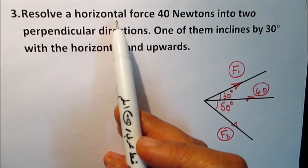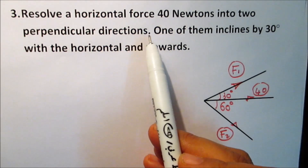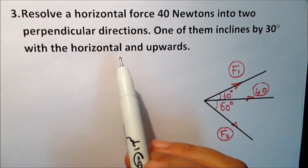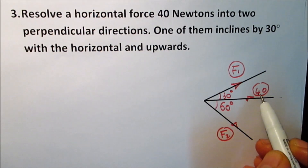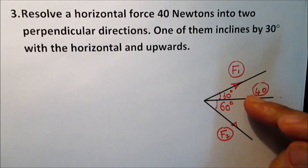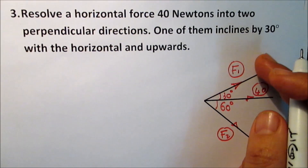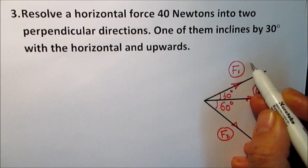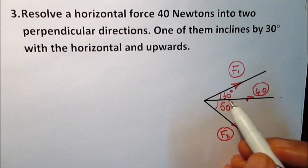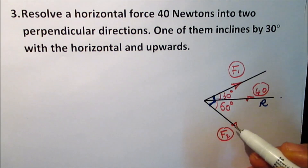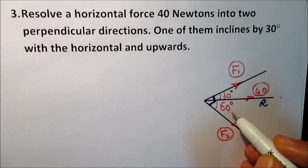Another example: resolve a horizontal force of 40 newtons into two perpendicular directions, one of which inclines by 30 degrees with the horizontal upwards. F1 inclines by 30 degrees upward and F2 is perpendicular to F1, going downward. This forms a right angle, and the angle between F2 and R is 90 minus 30 = 60 degrees.